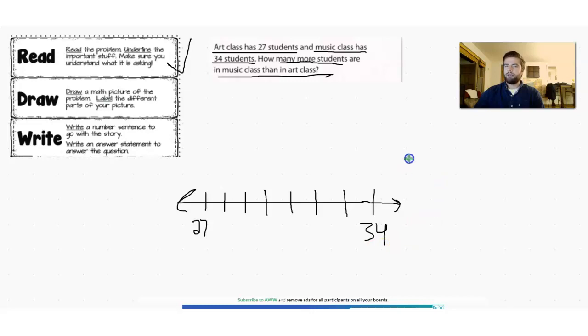Now that we have our number line, it'll make a little bit more sense what we need to do. The next step since it's a subtraction problem is we want to start at 34 students and see how many jumps it takes for us to get all the way back down to 27. That will tell us what the difference between 34 students and 27 students is and then we'll have our answer.